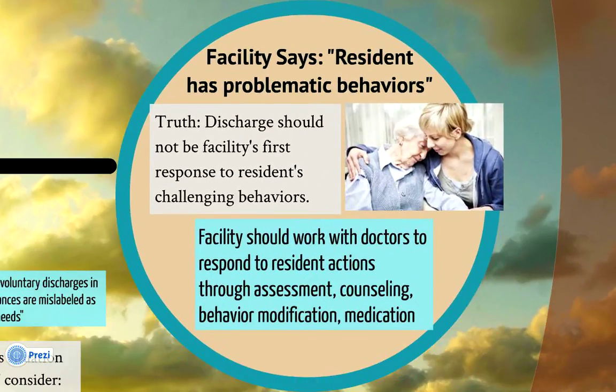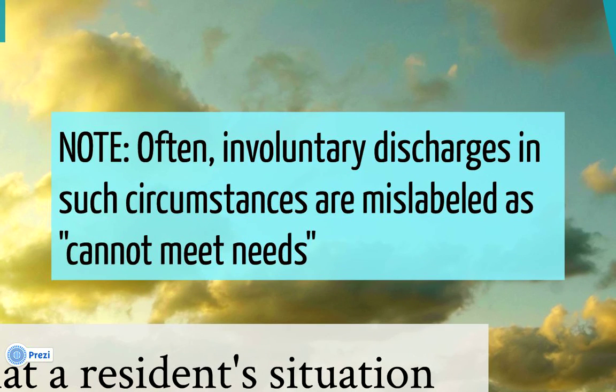A third improper but common situation is where a facility says the resident is being discharged because they have problematic behaviors. Involuntary discharge should not be a facility's first response to challenging behavior. A facility should work with the resident's doctor to respond by assessing the resident, treating them, working through behavior modification programs, and providing medication and counseling. It is not uncommon for a nursing home to mislabel the reason for discharge — one common mislabel is 'cannot meet needs,' where a facility cites this reason while continuing to treat others with comparable diagnoses.